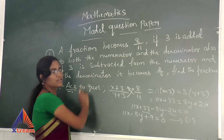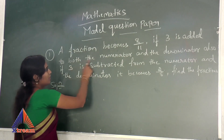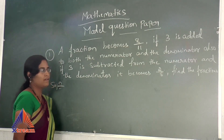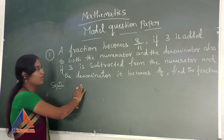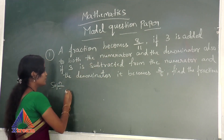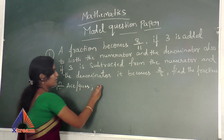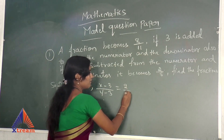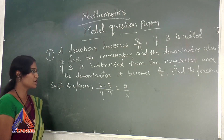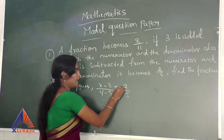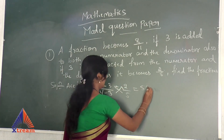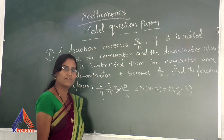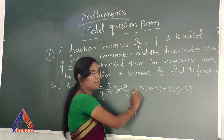Now see the second condition. If 3 is subtracted from the numerator and the denominator, it becomes 2 by 5. Same fraction — now we do subtraction. According to the question: X minus 3 divided by Y minus 3 is equal to 2 by 5. Same cross multiply method as equation 1: 5 into X minus 3 is equal to 2 into Y minus 3.